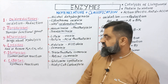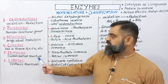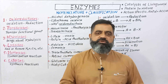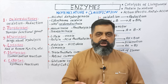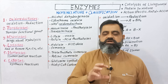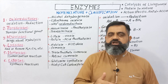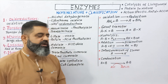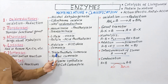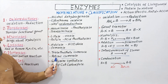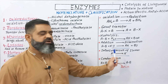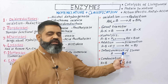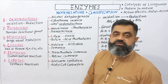The next category is isomerases. These enzymes catalyze isomerization reactions. Isomers are molecules with the same molecular formula but different structural formulas. These enzymes can change one molecule into another by changing its structure, making them isomers. Examples include triose phosphate isomerase and retinol isomerase. They interconvert isomers — a molecule A is converted into molecule A', its isomeric form.